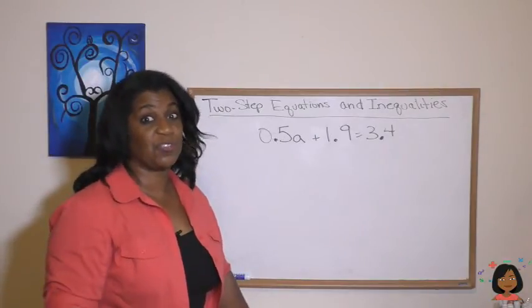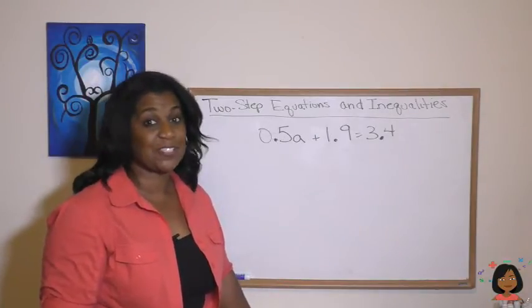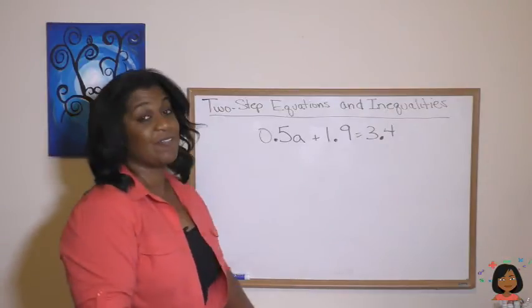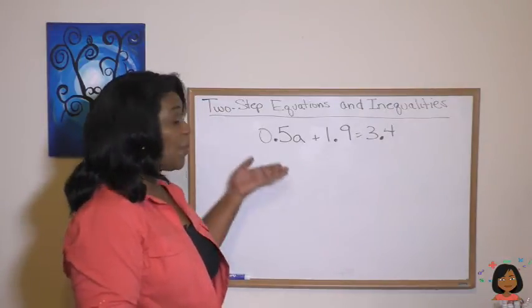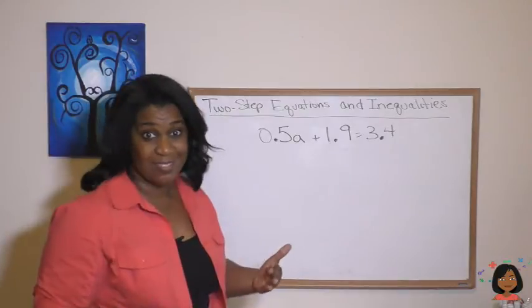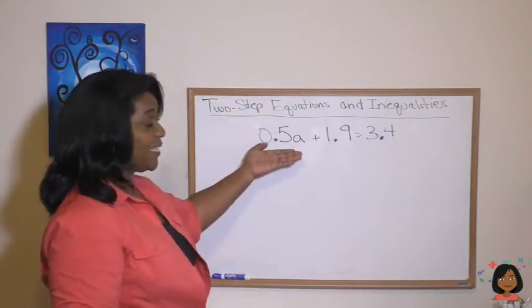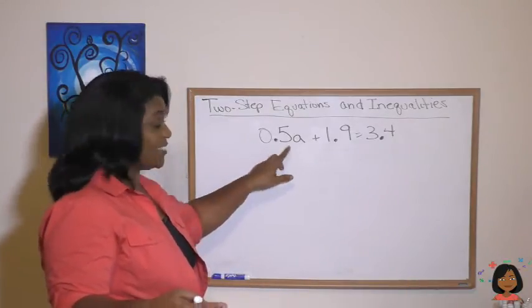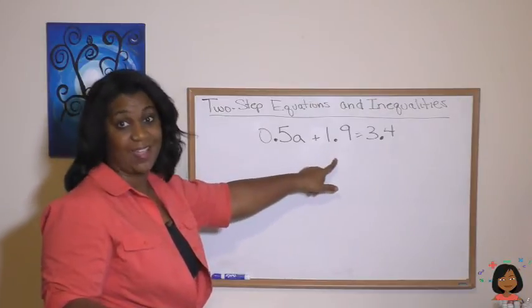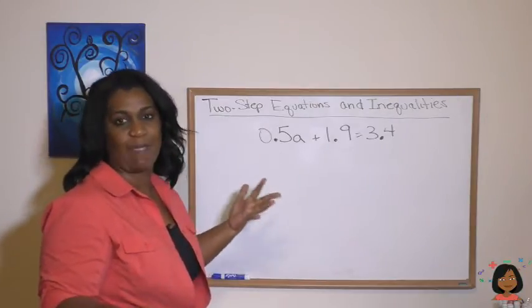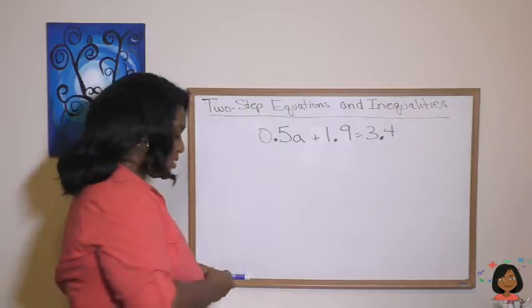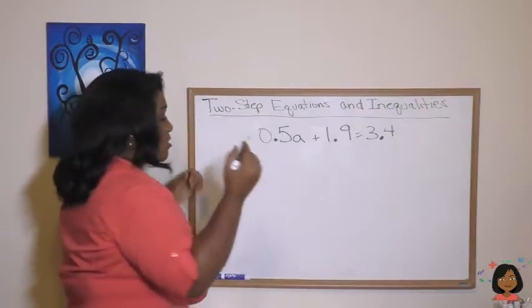The good news is, once you learn the process, you can apply it to just about anything. So here we have a two-step equation, but this time we have decimals. Process is still the same. So let's get the a by itself. And we're going to get rid of the one that it's not attached to, which is this guy, the 1.9.